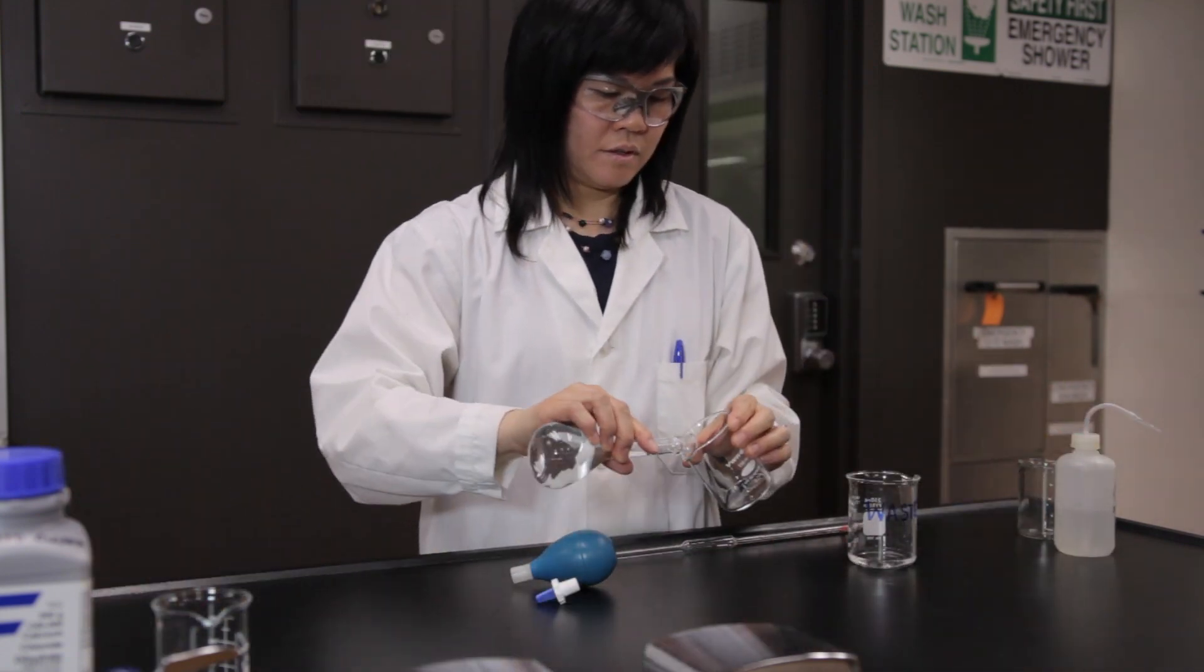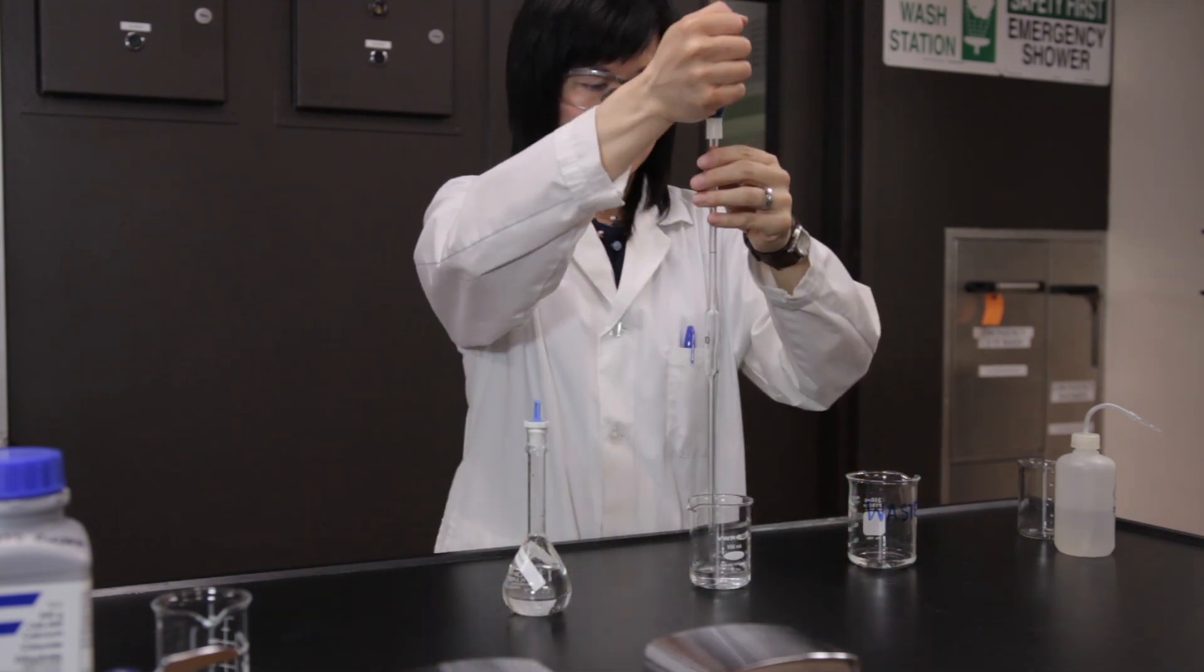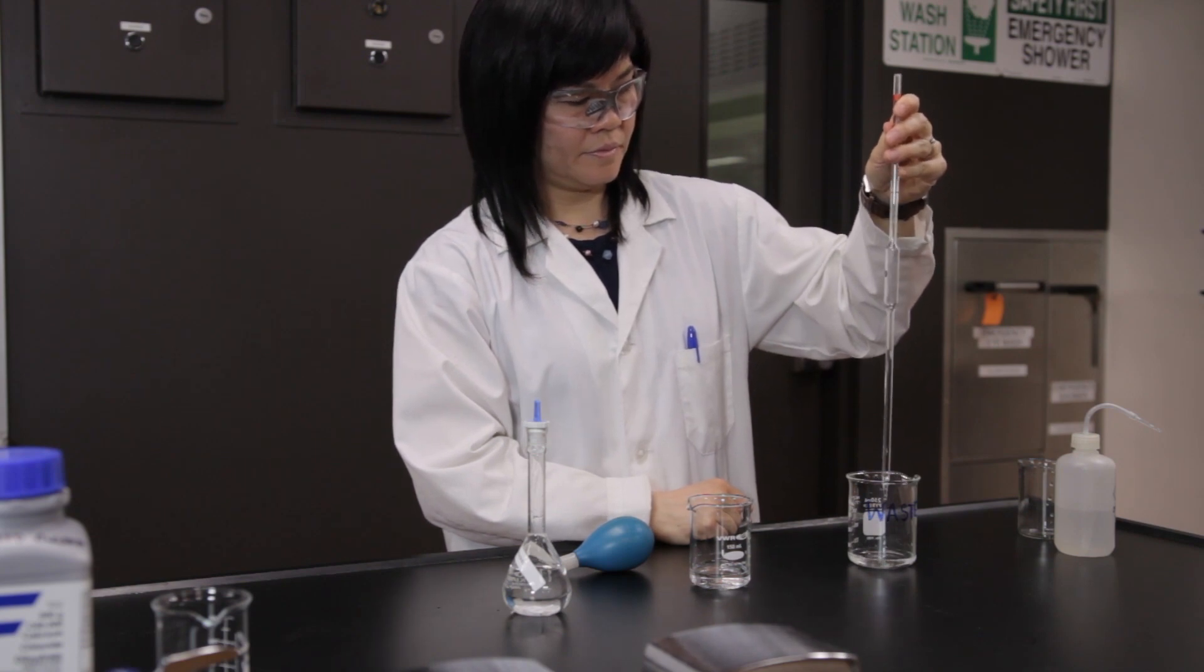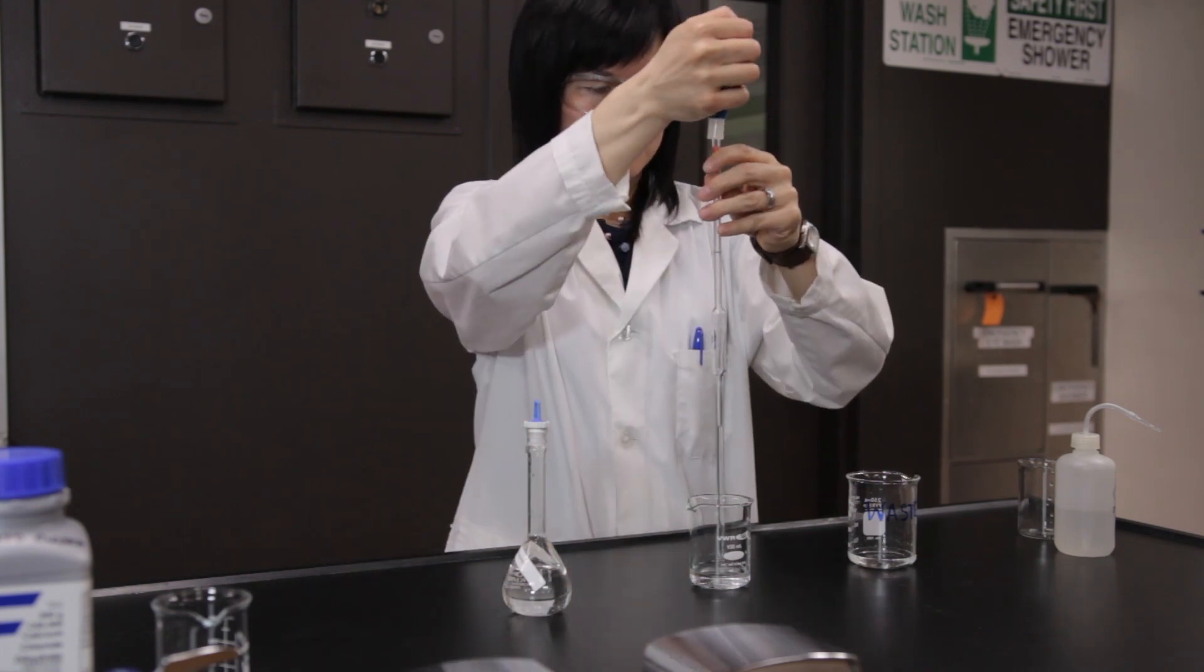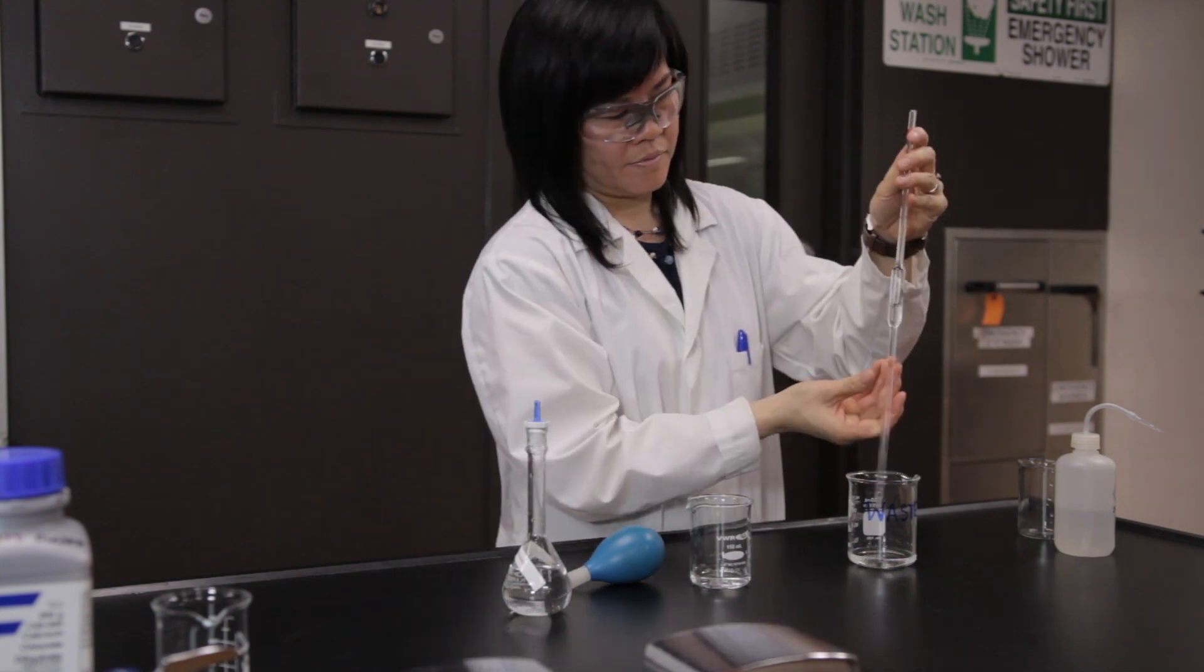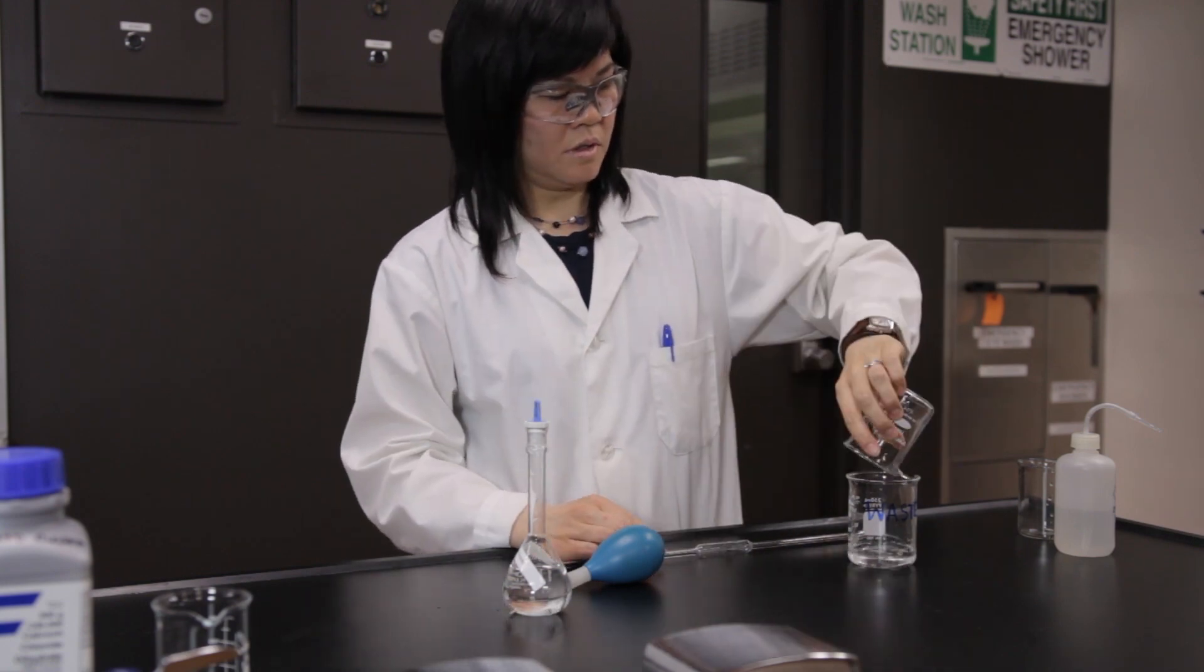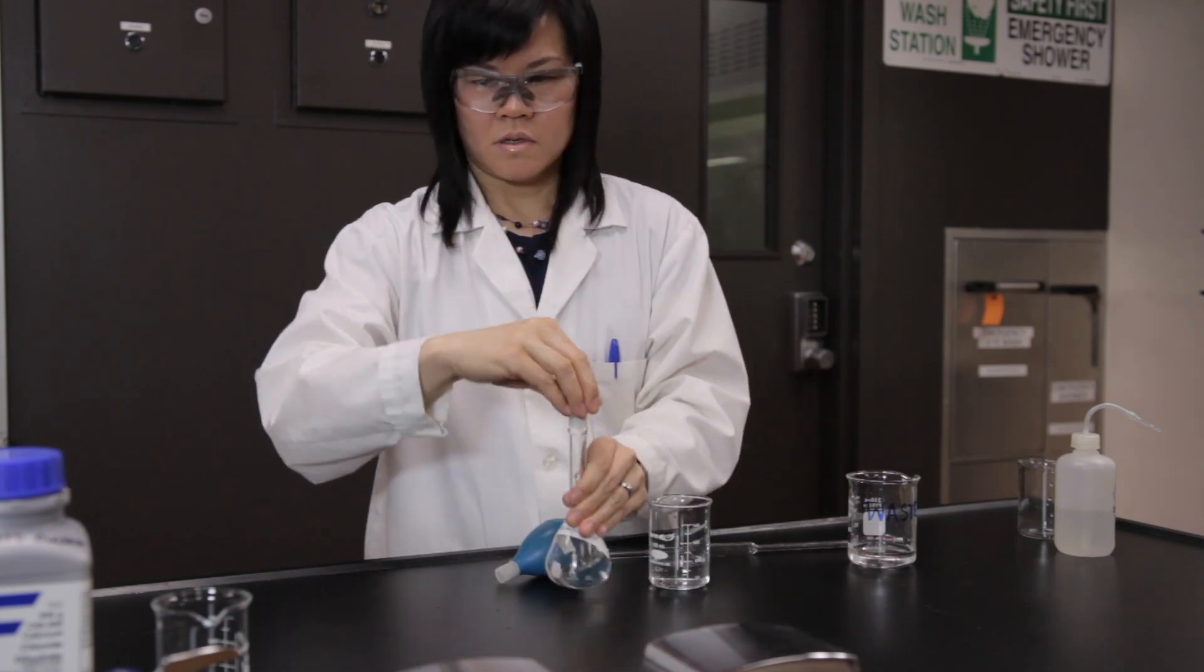Add a sufficient amount of the calcium chloride dihydrate solution into the prepared beaker and rinse the pipette two times. Refill the beaker with approximately 20 milliliters of the calcium chloride dihydrate solution.